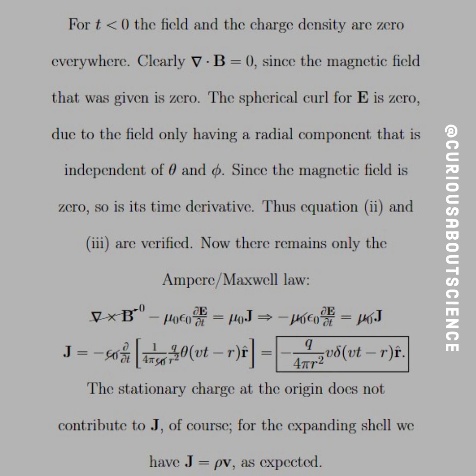For time t equals zero, the field and the charge density are zero everywhere. That was summarized by the step function as well. Now, clearly, we were given that B of r of t is equal to zero, so taking any spatial derivatives would yield zero too. Clearly, the divergence of B is equal to zero since the magnetic field that was given was zero. And similarly, we can use the spherical curl for E is zero, using the fact that we know that the field only having a radial component that is independent of theta and phi. When we look at the spherical curl, we know that the partial derivatives are with respect to theta and phi, and since they only have a radial component, they all cancel to zero. Use insight on that. Save yourself a couple calculations.